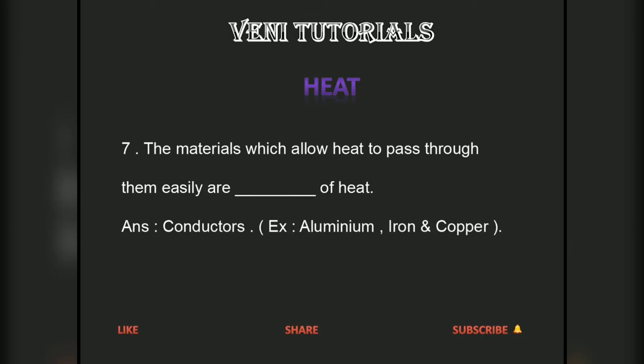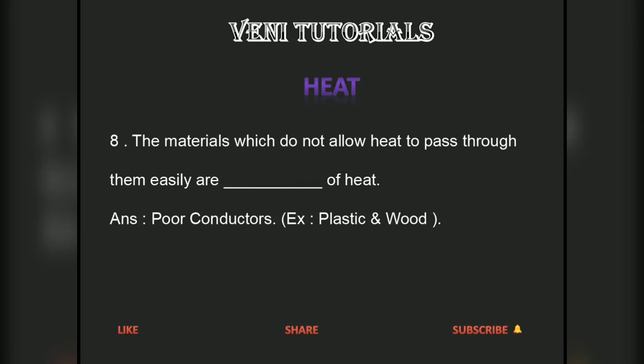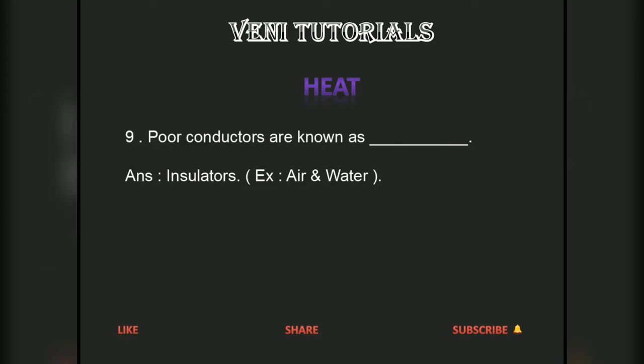The materials which allow heat to pass through them easily are conductors of heat. Examples include aluminum, iron, and copper. The materials which do not allow heat to pass through them easily are poor conductors of heat, also known as insulators. Examples include air and water.